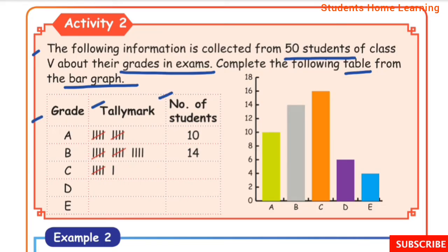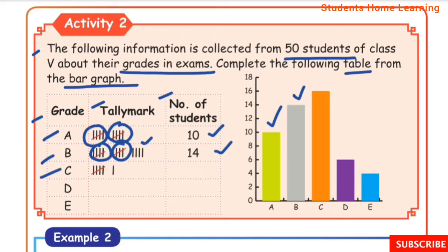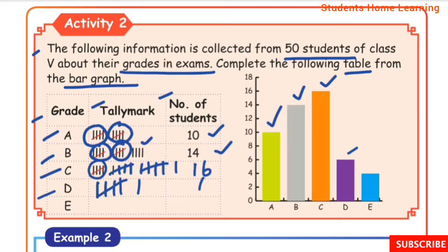Grade, tally mark, and number of students: Grade A — tally mark 5+5, number of students 10. Grade B — tally mark 5+5+4, number of students 14. Grade C — tally mark 16 total, number of students 16. Grade D — tally mark 6, number of students 6. Grade E — tally mark 4, number of students 4. Complete the table accordingly.